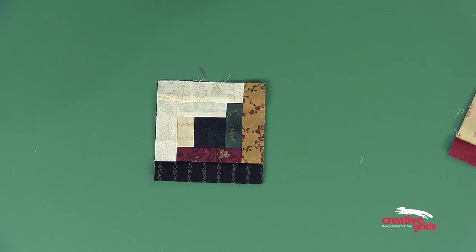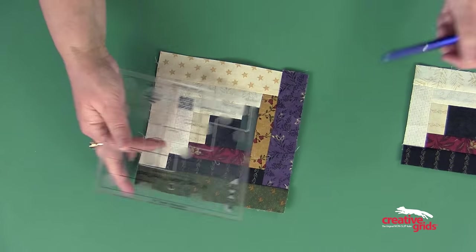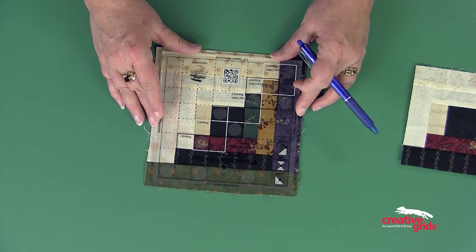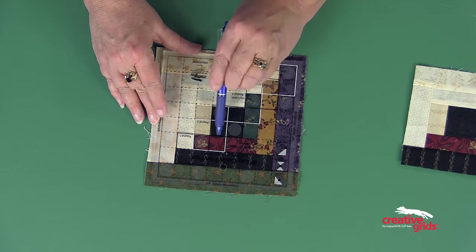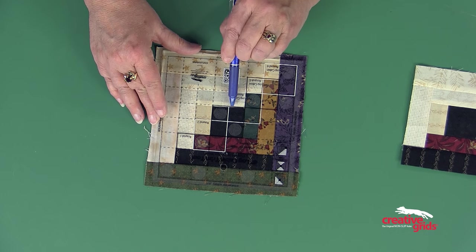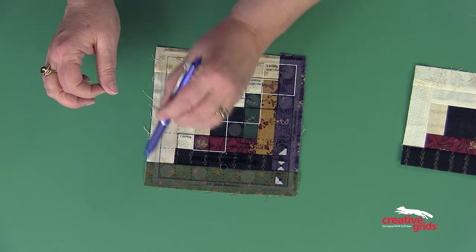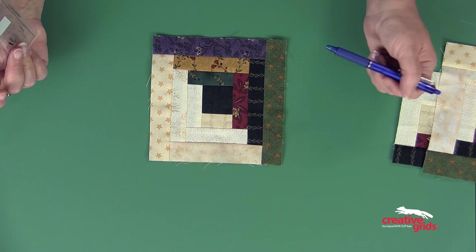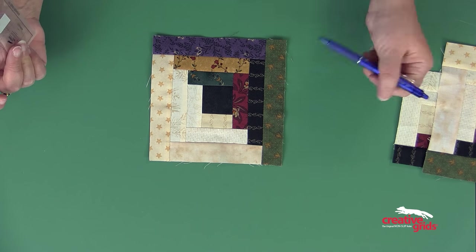To do the last round, I'm going to add two lights and two darks once again. This time I move to the round three square, which is in the center of the tool, and I'll trim all the way around the outside of the block to create a six-inch finished log cabin that measures six and a half inches at this point.